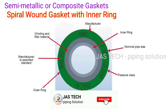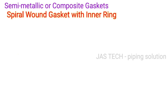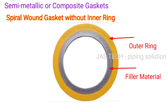Spiral wound gasket with inner ring: This gasket has three portions - inner ring, outer ring, and filler material in the middle area. Last type: spiral wound gasket without inner ring.